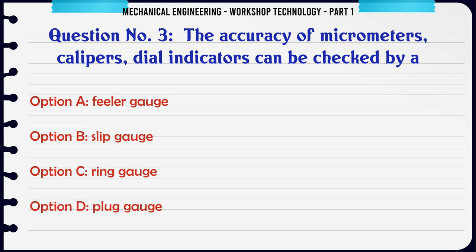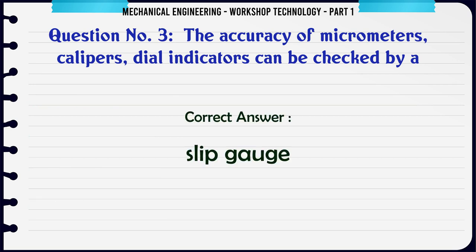The accuracy of micrometers, calipers, and dial indicators can be checked by: A. Feeler gauge. B. Slip gauge. C. Ring gauge. D. Plug gauge. The correct answer is: Slip gauge.